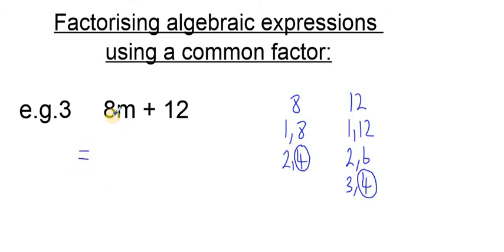So we can now write this expression in the factored form, taking out a 4 from each term. So 4 bracket, 4 times what gets 8m? That's 2m. And that's correct when we do a multiplication check.